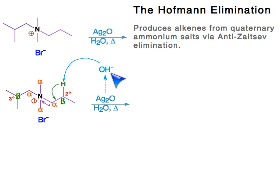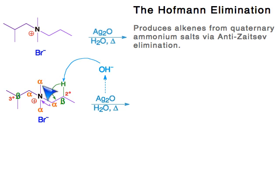This is very important: you are going to remove the beta hydrogen from the least substituted beta carbon. The alpha carbons are next to the nitrogen. The beta carbons are next to the alphas. And the hydrogen on a beta carbon is called a beta hydrogen.